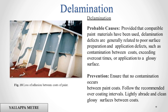Delamination. Probable causes: provided that compatible paint materials have been used, delamination defects are generally related to poor surface preparation and application defects, such as contamination between coats, exceeding overcoat times, or application to a glossy surface. Prevention: ensure that no contamination occurs between paint coats. Follow the recommended overcoating intervals. Lightly abrade and clean glossy surfaces between coats.